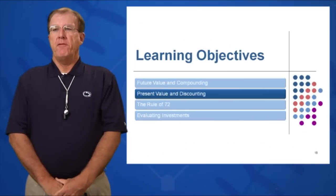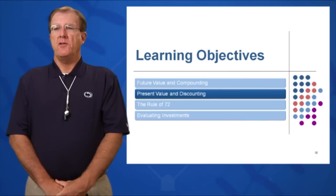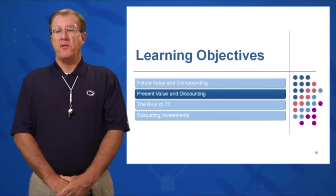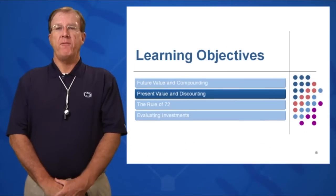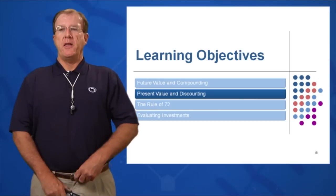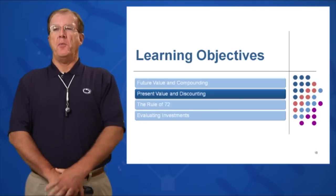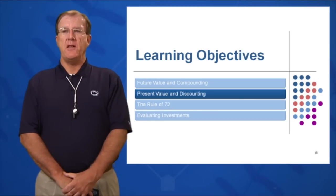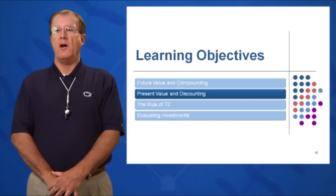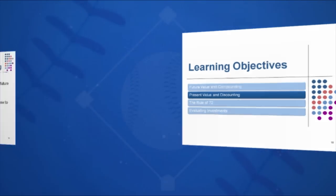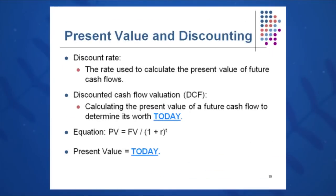The second learning objective in Session 5 is present value and discounting. We're going to use the same formula we used in the first part of future value: FV equals PV times 1 plus R to the T. The formula doesn't change. We're looking in this case to solve for the present value variable PV, and that means today.